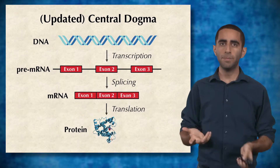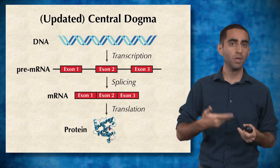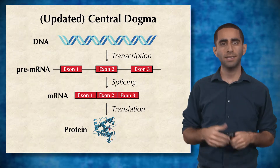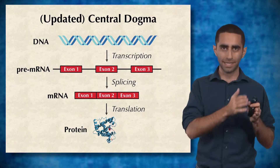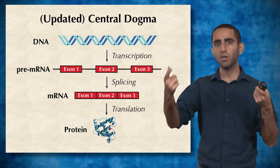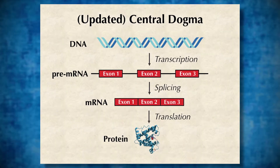So we should actually update our central dogma. DNA is transcribed to what we call pre-mRNA — it's not directly transcribed to mRNA. This pre-mRNA basically has exons, but also has spaces between them called introns, that showed up in the DNA but don't show up in the final protein. So we have to connect the exons together by cutting out the introns through a process called splicing.